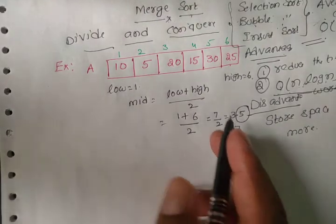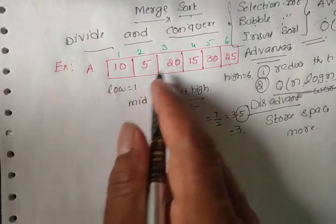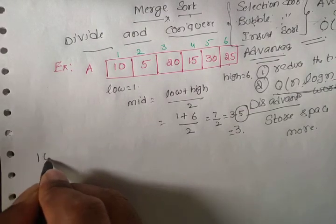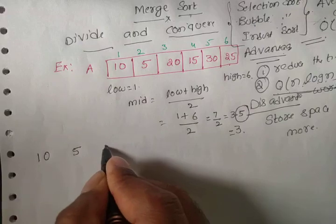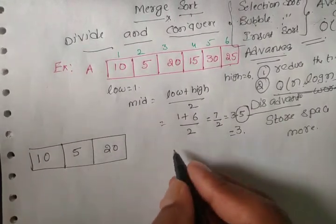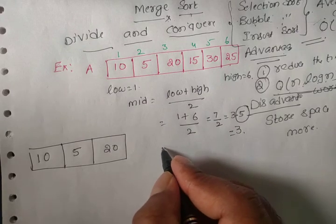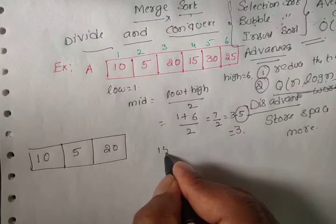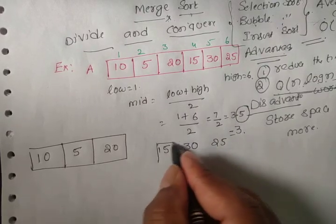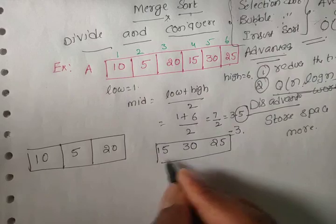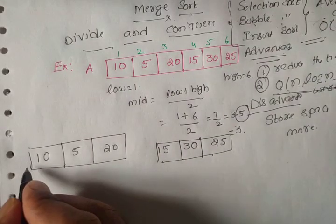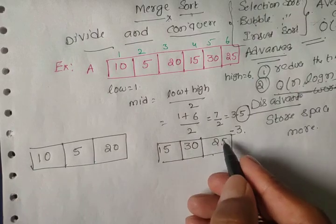So the original array will be divided into two parts: the first partition is [10, 5, 20] and the second partition is [15, 30, 25]. This is one array and that is another array.